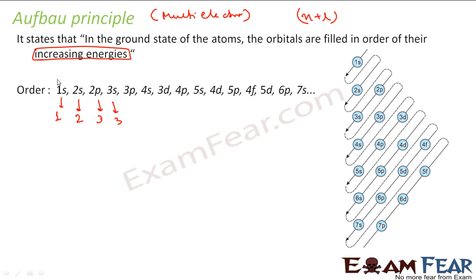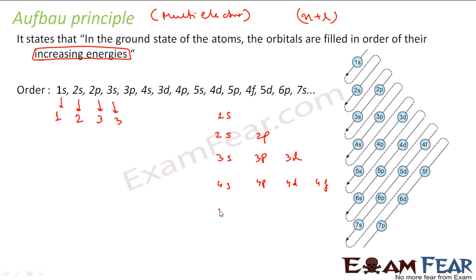Electrons are filled first in 1s, then 2s, then 2p, then 3s, 3p, and so on. A good way to understand this is to write: 1s / 2s 2p / 3s 3p 3d / 4s 4p 4d 4f / 5s 5p 5d 5f / 6s 6p 6d 6f. Nothing beyond f is required, so the maximum subshell listed is f.